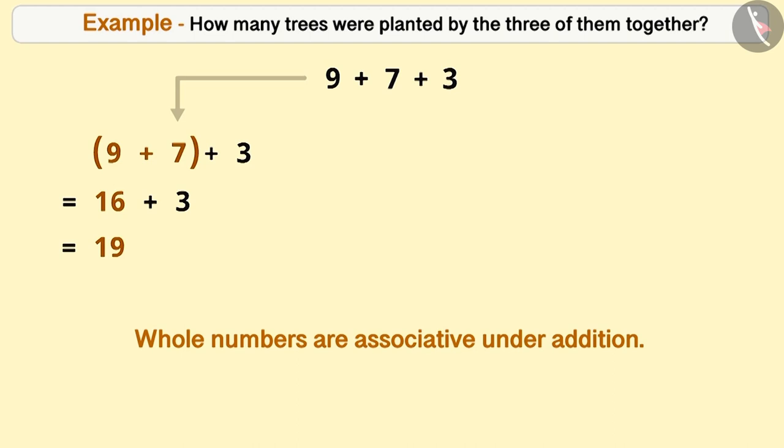Since whole numbers are associative under addition, we can also solve this by making a group of 7 and 3. The result will also be 9 + (7 + 3), which is equal to 19.